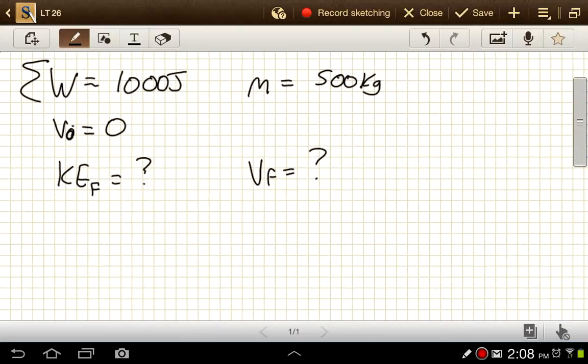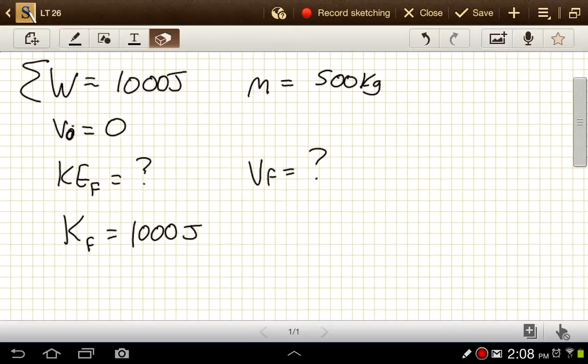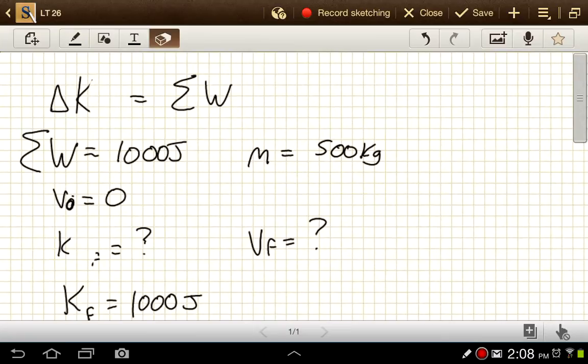then it's going to have a final kinetic energy. I realize I keep writing KE, but actually on the AP test they just do a K. Kinetic energy final would just be 1,000 joules. Let's make that correction here. So no E in the kinetic energy, just the K.